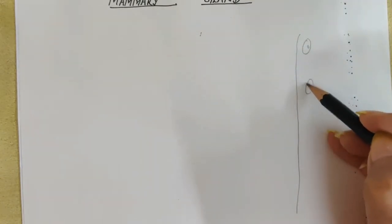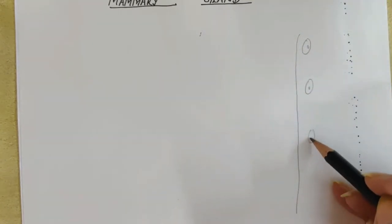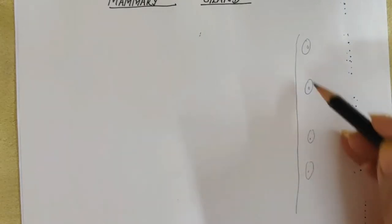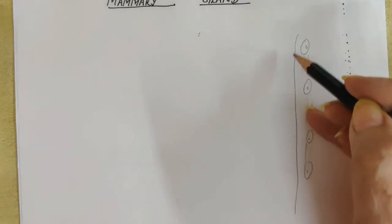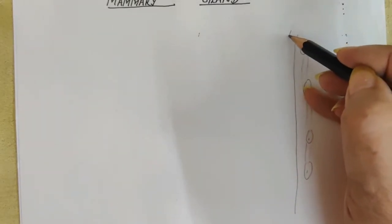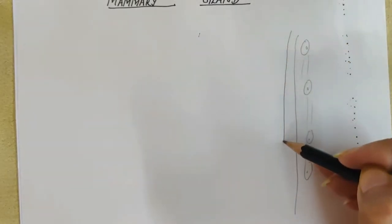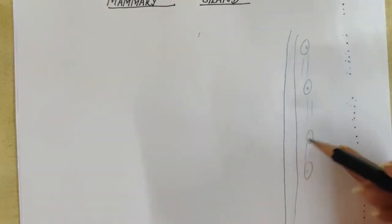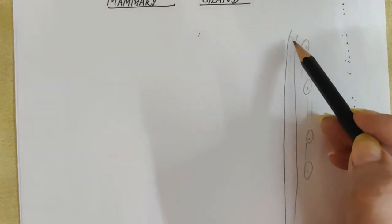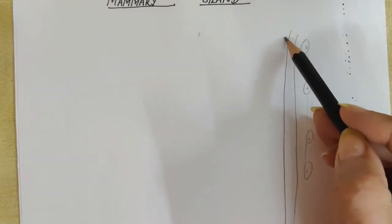the intercostal muscles. These are the ribs and in between we have intercostal muscles. On top of that is present the pectoralis major muscle. So this is our pectoralis major muscle. Now on top of that is present the